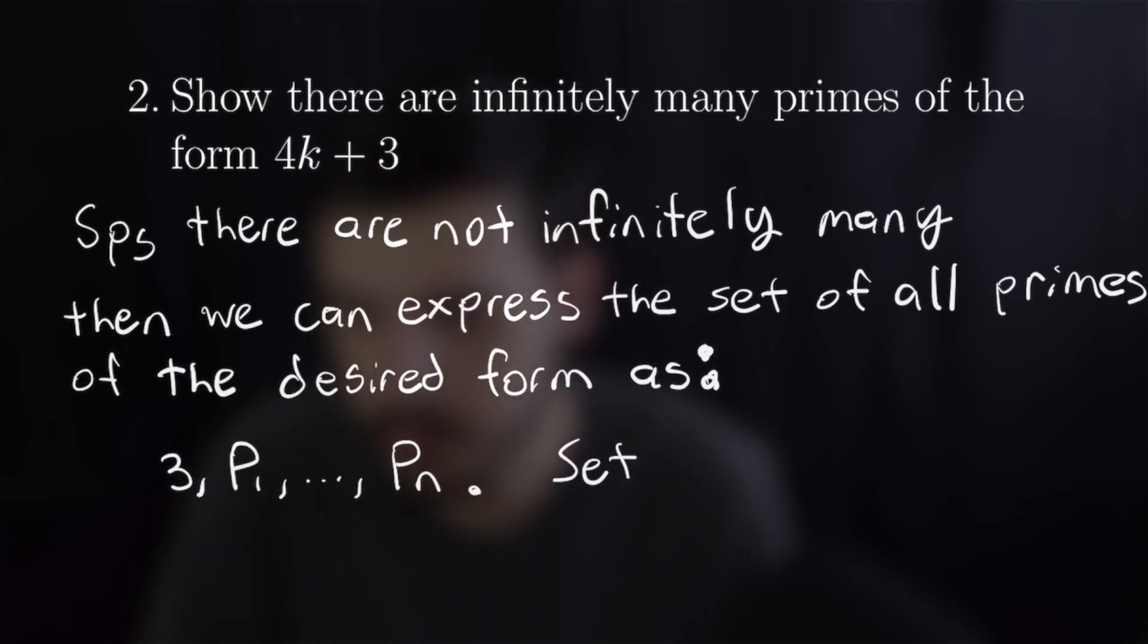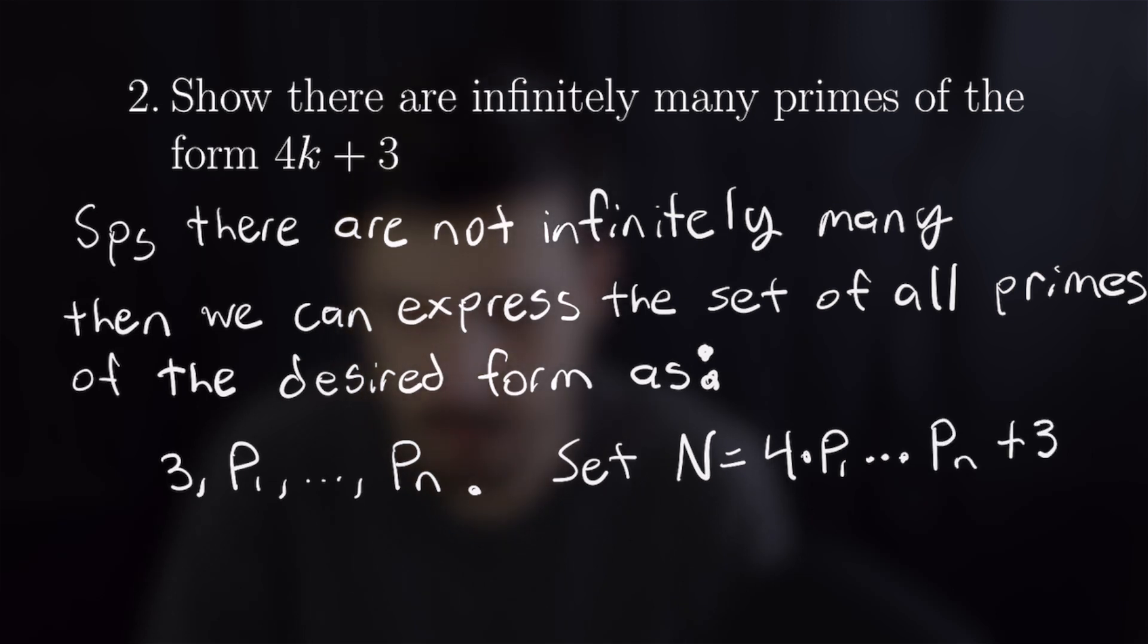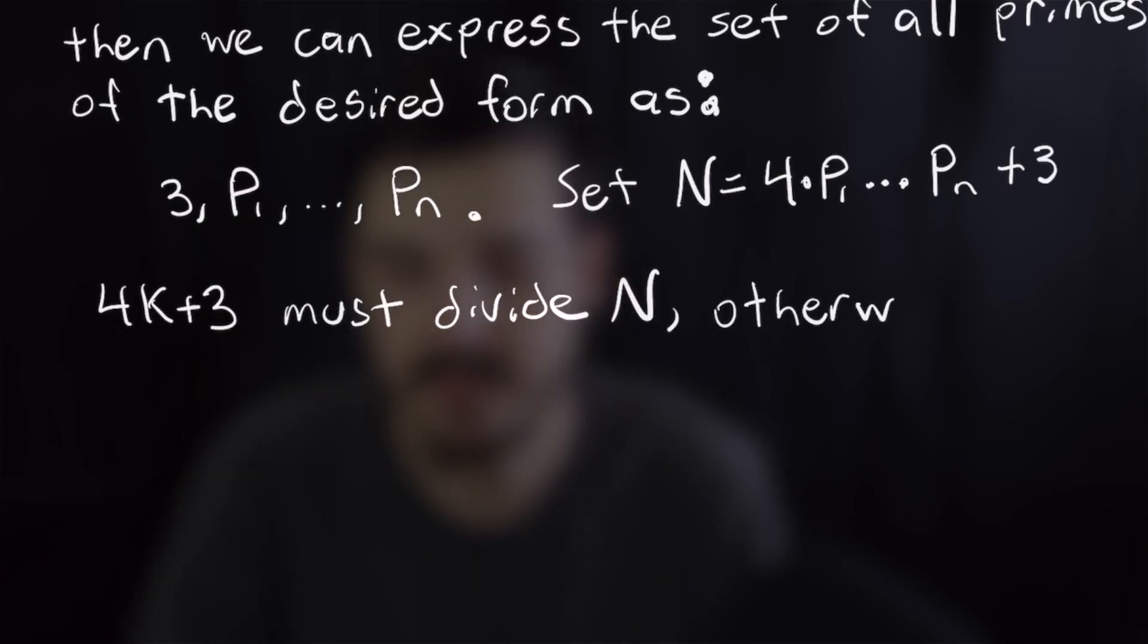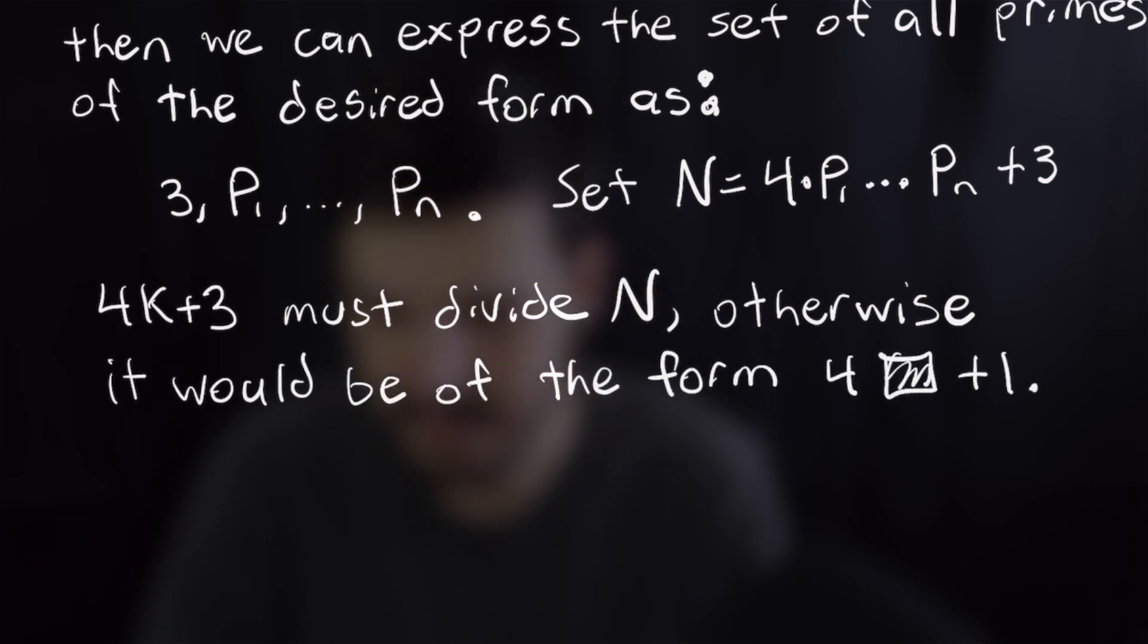We're going to set capital N equal to four times p1 all the way up to p_n plus three. Now from this we know that 4k plus 3 must divide N. If 4k plus 3 does not divide N then N must be of the form four times something plus one which it is obviously not.